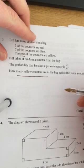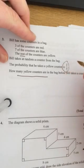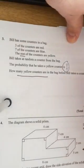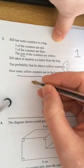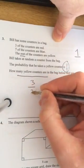So Bill takes at random a counter from the bag. They've given us the probability which is 2/7, and we know that all probabilities must sum to 1. Now, we don't know how many there are, so let's call that x.